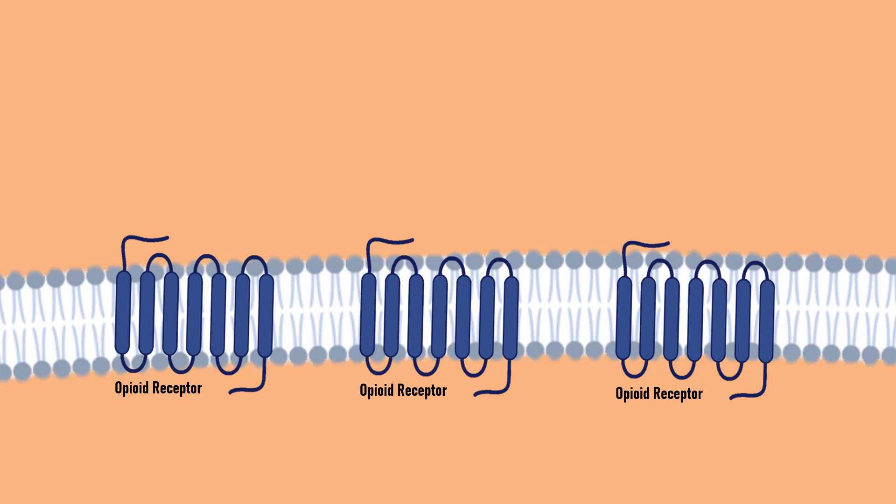Naloxone is an opioid antagonist. This means that when it enters the body, it can prevent opioids from binding to receptors by binding onto the receptors themselves. This prevents the opioids from eliciting a response from the body which may lead to the symptoms of an overdose.